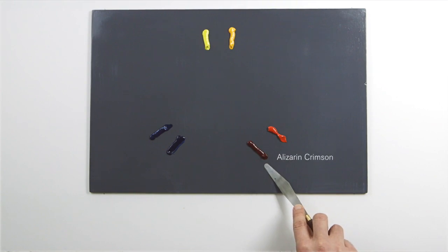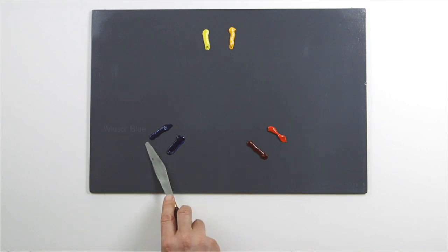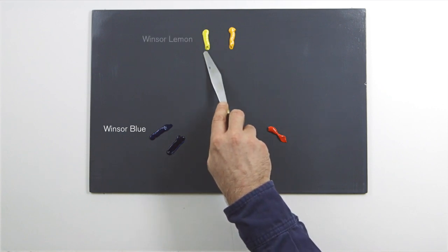Here the alizarin crimson has a violet bias, and so does the French ultramarine blue. Finally, Winsor blue has a green bias, which leads us back to Winsor lemon.